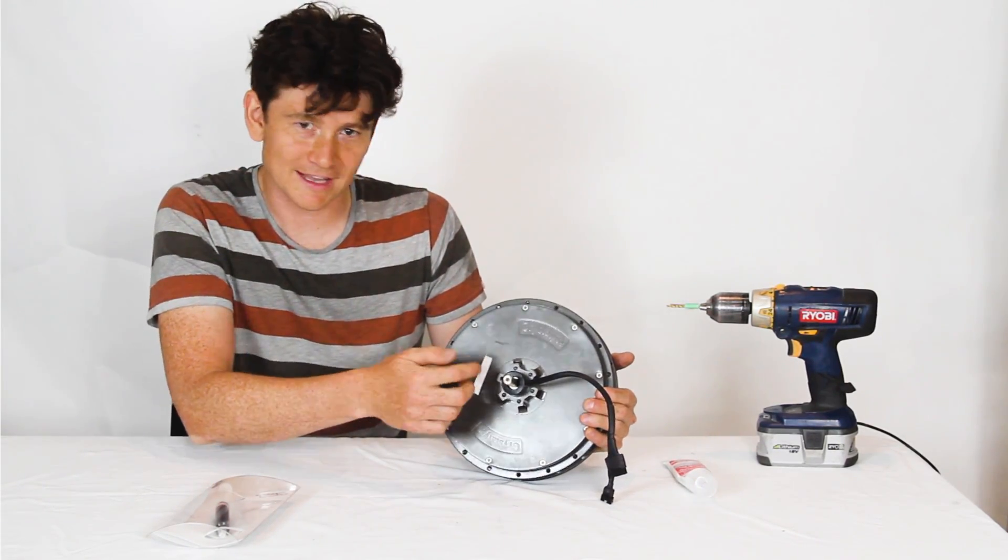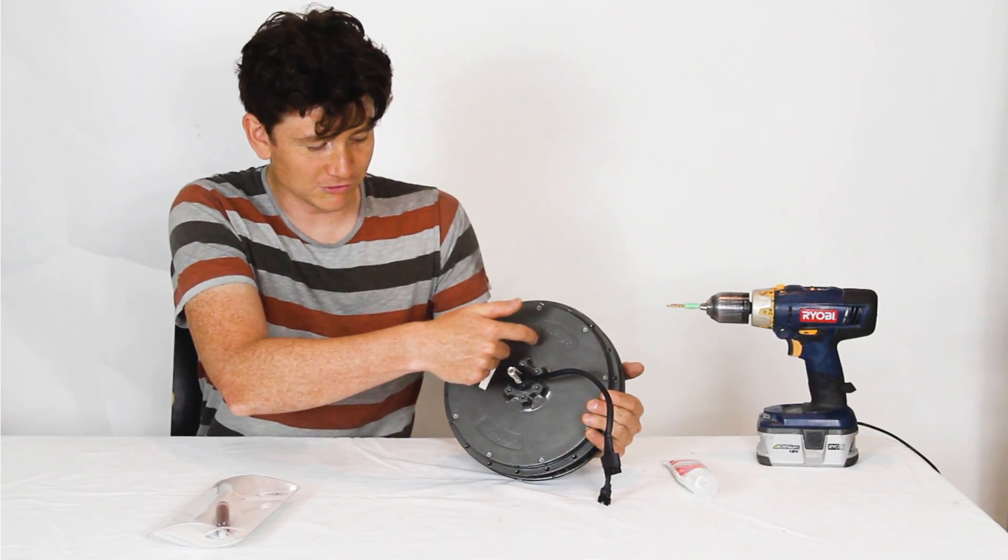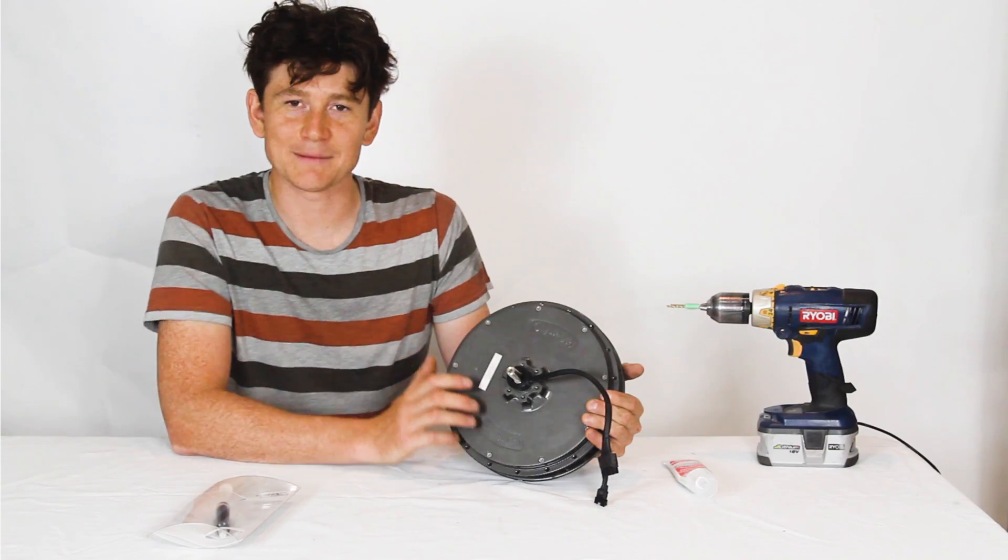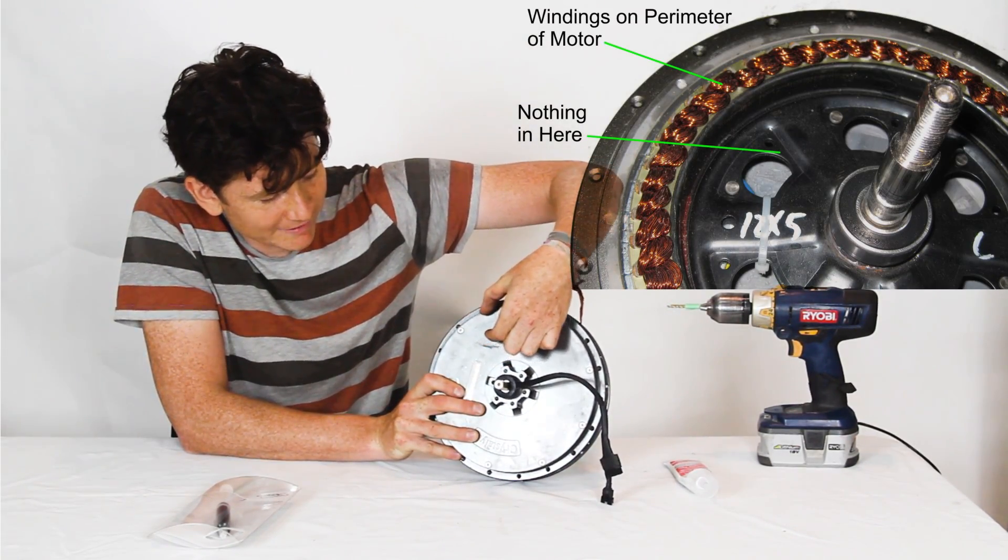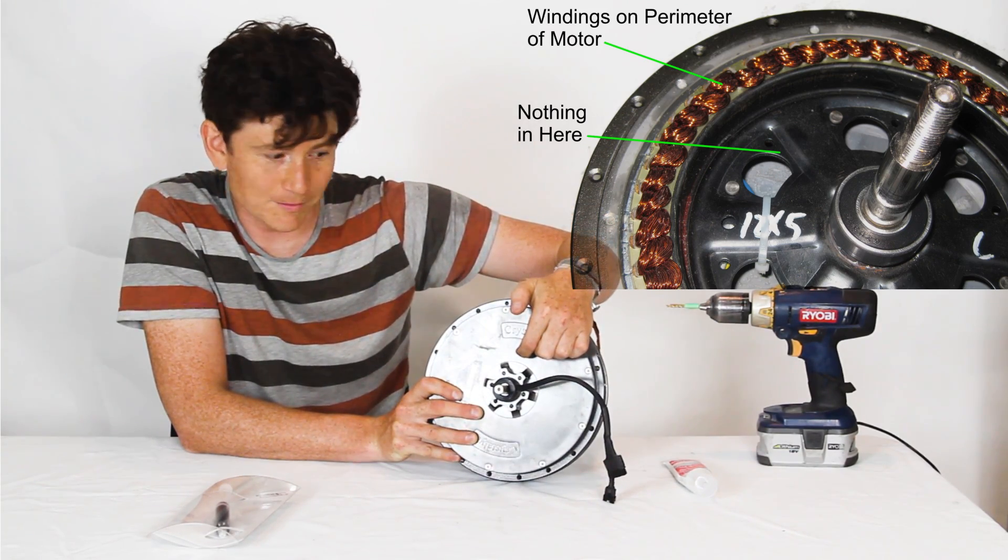If you look closely you can see none of these disc holes go all the way through. So we want to drill a hole into the side plate in a location that's not likely to damage any of the internal wiring. In a hub motor all the active wiring is usually right around the perimeter and there's very little going on closer to the core of the motor. So that's roughly where we're going to drill this hole.